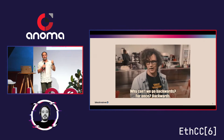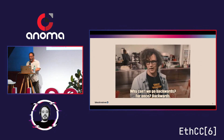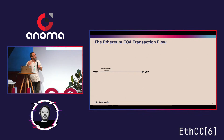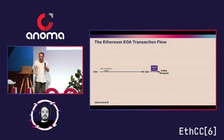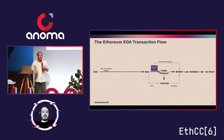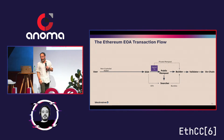To build the mental model you have to go backwards. Let's start with the standard Ethereum EOA transaction flow we have today: a user uses their non-custodial wallet to engage with an EOA, the EOA submits a signed transaction to the public mempool, that goes to a builder, the builder talks to a relay, the relay sends the block to a validator, and that goes on-chain — with some extra steps for MEV, private mempools, and searcher bundles.